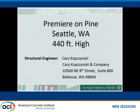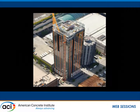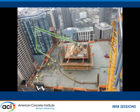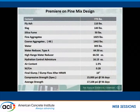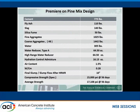The Premier on Pine project in Seattle shows pictures of heavy reinforcement and construction activity. The mix design here includes 775 pounds of cement, 110 pounds of fly ash, slag, and silica fume, with fine and coarse aggregate. This mix had a 10-inch final slump, and on average 17,000 PSI was obtained at 56 days.